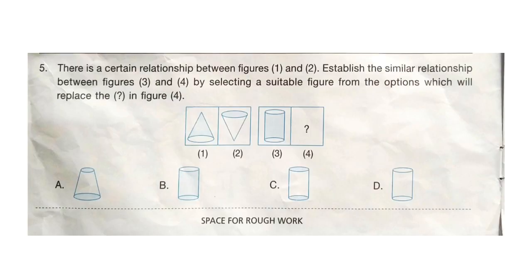Question 5: There is a certain relationship between figures 1 and 2. Establish a similar relationship between figures 3 and 4 by selecting a suitable figure from the options which will replace the question mark in figure 4. The correct answer is option C.